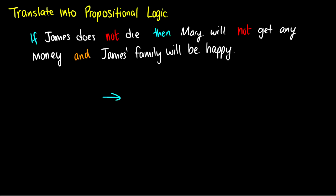James' family will be happy. So what I see here is I see an if-then statement with James does die with a not in there. So we're going to have not something. Then Mary will not get any money. So there's a not there. And then there's something else. So it looks like our translation is going to take this form.